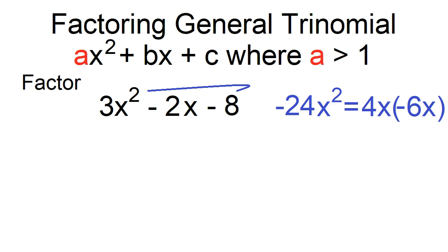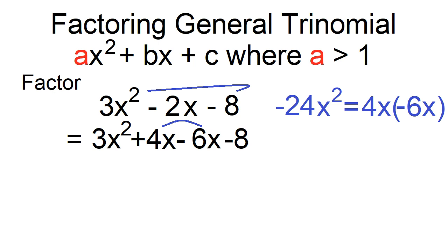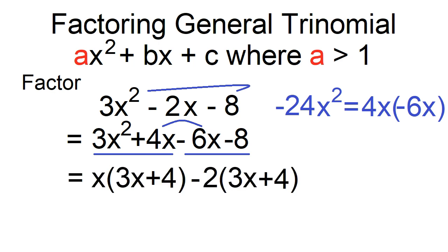Replace negative 2x with 4x minus 6x. Group the first two terms together and the next two terms together. For 3x² + 4x, the GCF is x; factor out x and the other factor is 3x + 4.